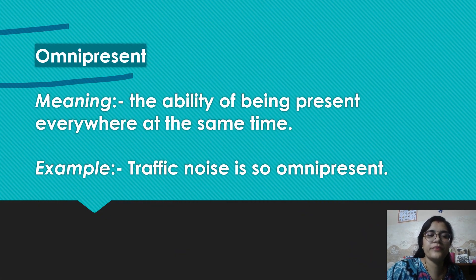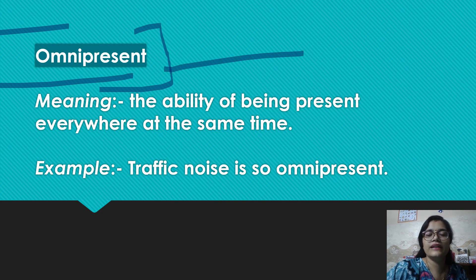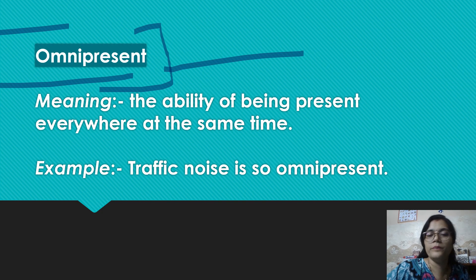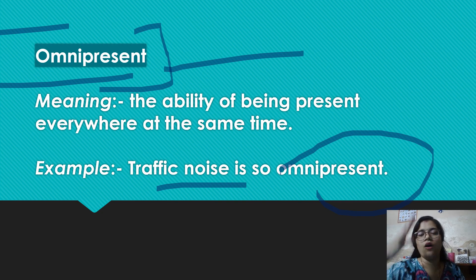Okay, next is omnipresent — omnipresent is a word which was recently used by someone who is in the limelight for multiple reasons. So guys, omnipresent means: having the ability of being present everywhere at the same time. Kisi na kisi taray se agar aapki baat daas jagah ho rahi hai, which means you are available there — you are being omnipresent. Example: Traffic noise is so omnipresent because at the same time it is present in multiple areas.